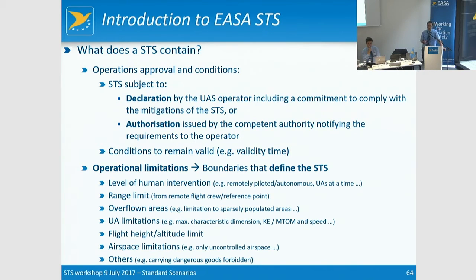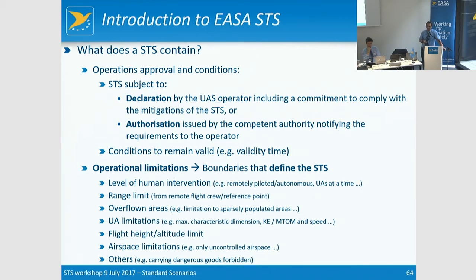The scenario will include a set of operational limitations, which are the boundaries that define and characterize the standard scenario. These may include the level of human intervention — covering whether we limit operations to only remotely operated or whether we allow autonomous operations; whether we limit to only one drone at a time or a swarm; whether it can be operated from a moving vehicle or we allow handover between control stations. Then we have range limits — from the remote pilot it could be VLOS or BVLOS with certain limitations.